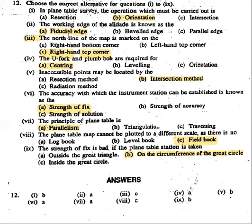The north line of the map is marked on the drawing sheet. The map is marked with the north line, and it is marked in the top right-hand corner.